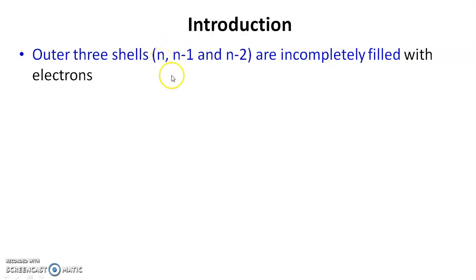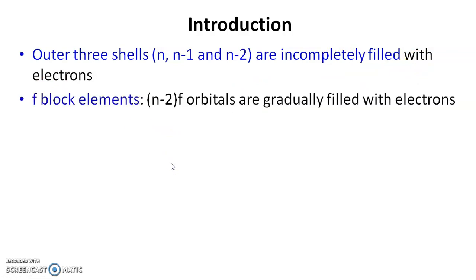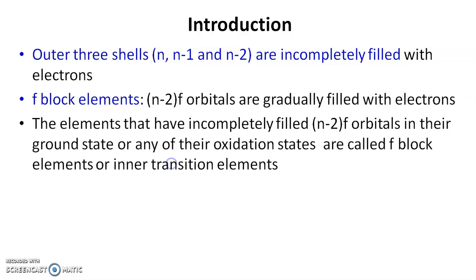n is the outermost, n-1 is the second last shell. These three shells are incompletely filled with electrons. Most importantly, on the basis of electronic configuration, inner transition elements are called f-block elements because in these elements n-2 f orbitals are gradually filled, and therefore they are called f-block elements.